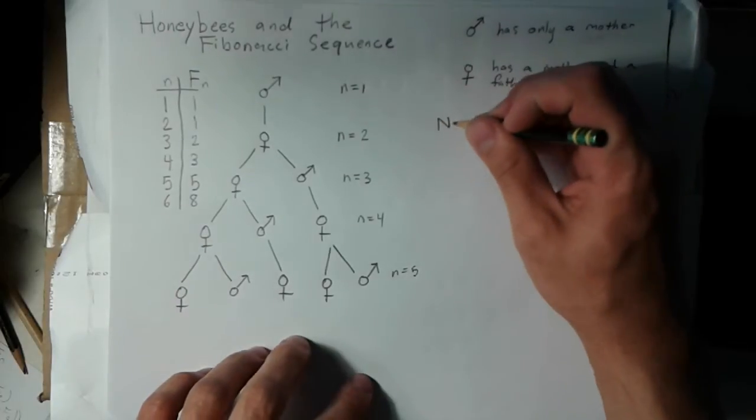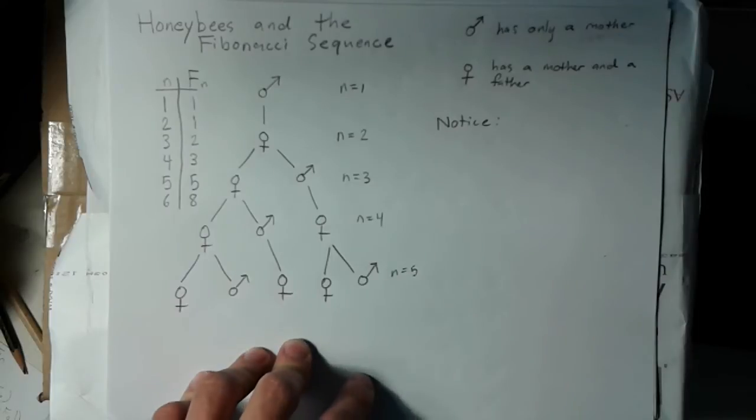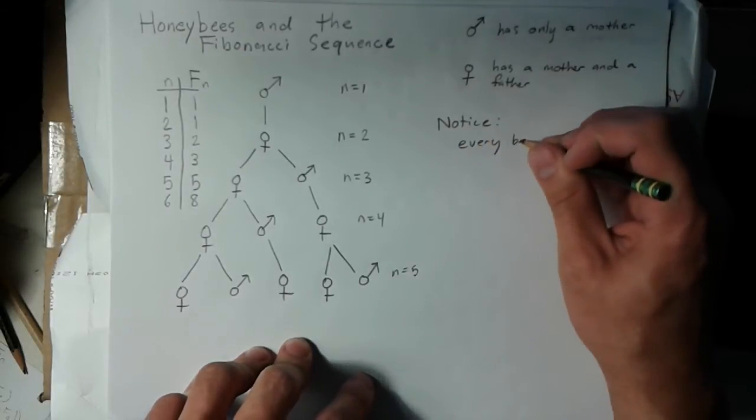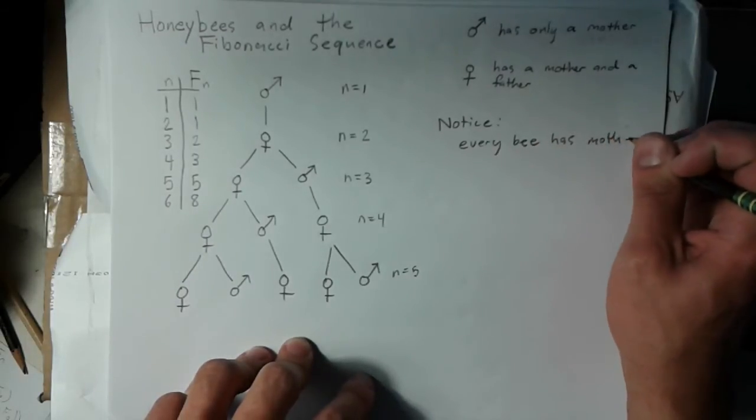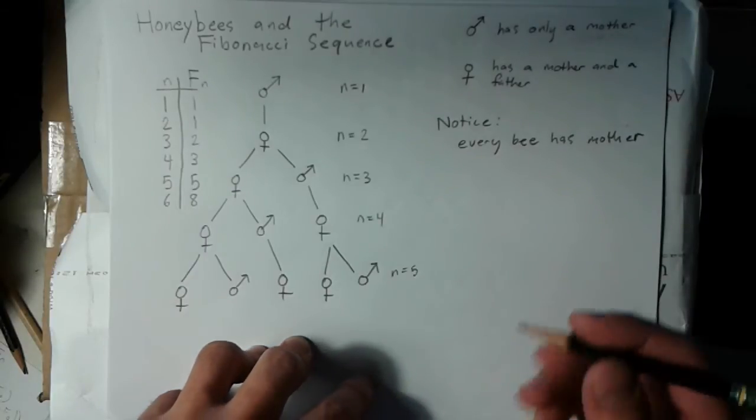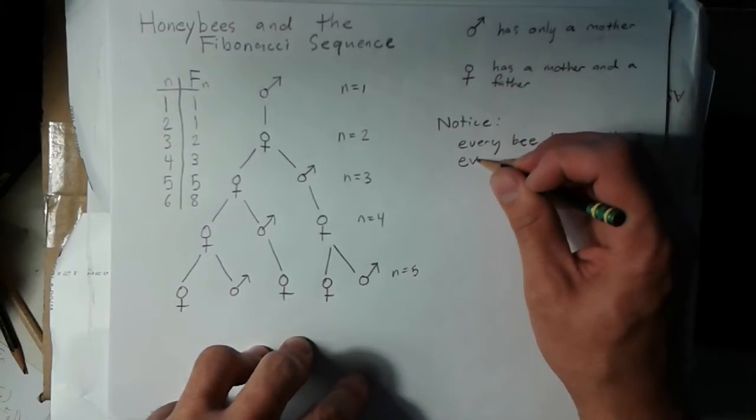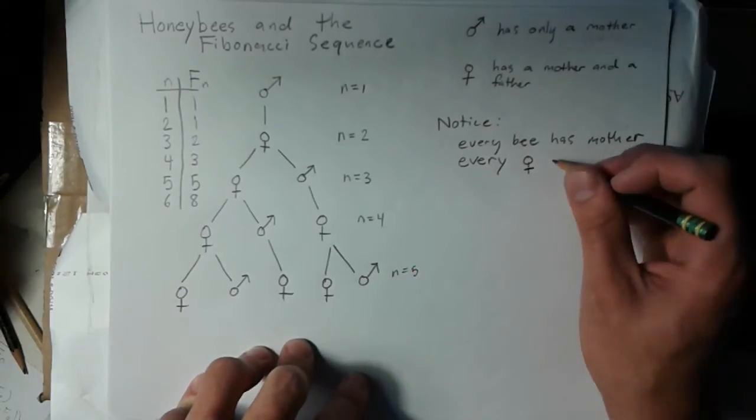There are a couple things to notice here. First of all, every bee has a mother, and that seems pretty obvious, but it does end up being kind of important. Another thing that ends up being important is that every queen on this chart is a mother.